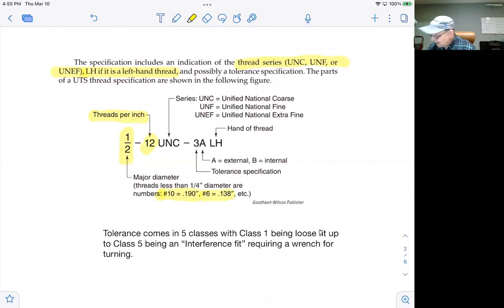Moving over, the 12 in this spec is the number of threads per inch. Or in other words, this bolt has 12 threads per every inch, which means it has six threads for every half inch. The UNC specifies the series of the threads. UNC says that this is Unified National Coarse. So these are national coarse threads. It could also have been a UNF, which stands for fine threads, or UNEF, which stands for extra fine threads.